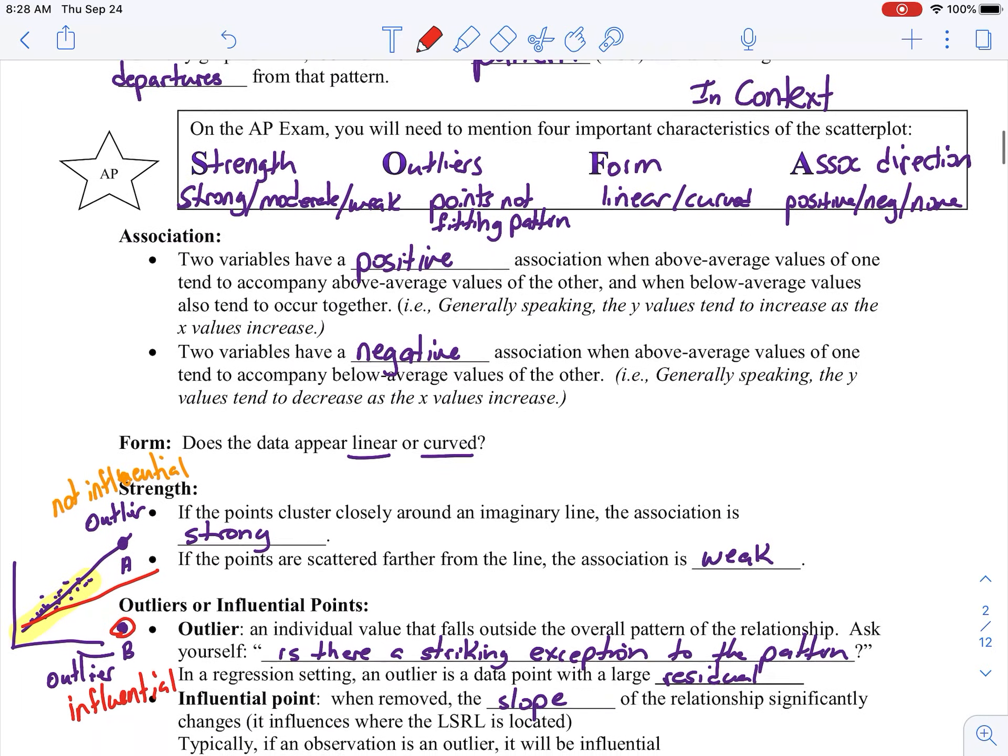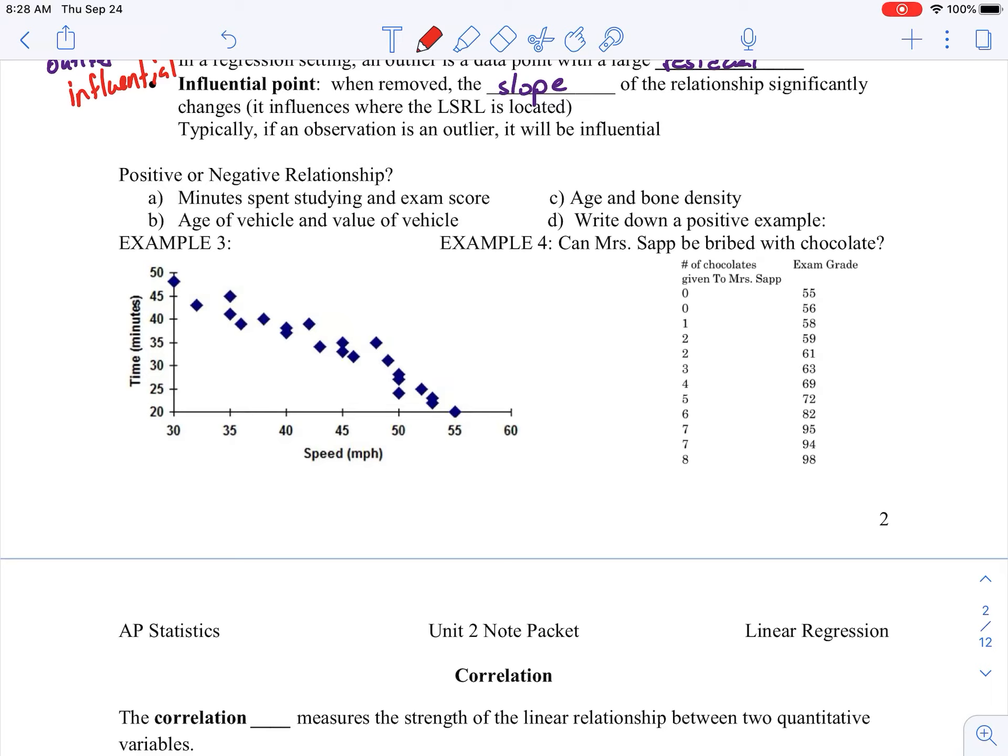If we scroll down here and practice this again, here we have the speed and the time and minutes. Actually four of them. Positive or negative relationships. The minutes spent studying and your exam score. You'd think as your minutes went up, your exam score should go up. So, since they both go up, that's positive. The age of the vehicle and the value of the vehicle. So, as my car gets older, the value goes down. So, that means one is going up, one is going down. That's going to be a negative relationship.